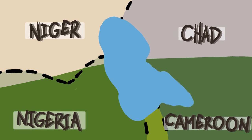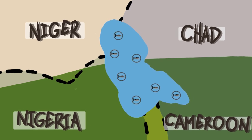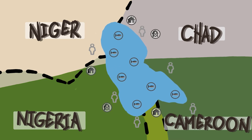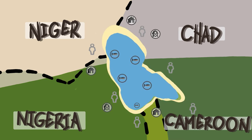Over the past 50 years, Lake Chad, a source of food and water for tens of millions of people, has lost over 90% of its volume due to climate change.